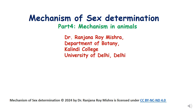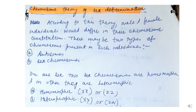Hello dear students, this is Part 4 lecture of Mechanism of Sex Determination, and we will discuss mechanism of sex determination in animals. In Part 3 we discussed mechanism of sex determination in plants, in Part 2 we discussed mechanism in Drosophila, and in Part 1 we discussed dosage compensation and Lyon's hypothesis. Please see other lectures for those topics.